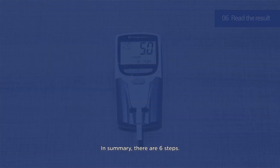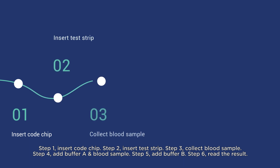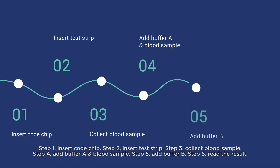In summary, there are 6 steps: Step 1 — Insert code chip. Step 2 — Insert test strip. Step 3 — Collect blood sample. Step 4 — Add buffer A and blood sample. Step 5 — Add buffer B. Step 6 — Read the result.